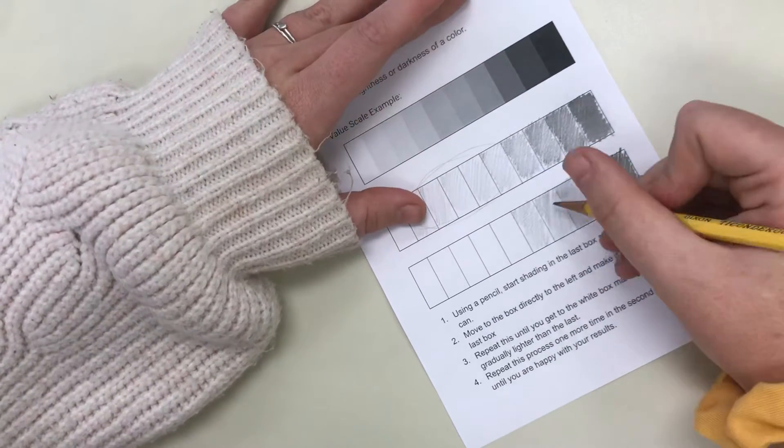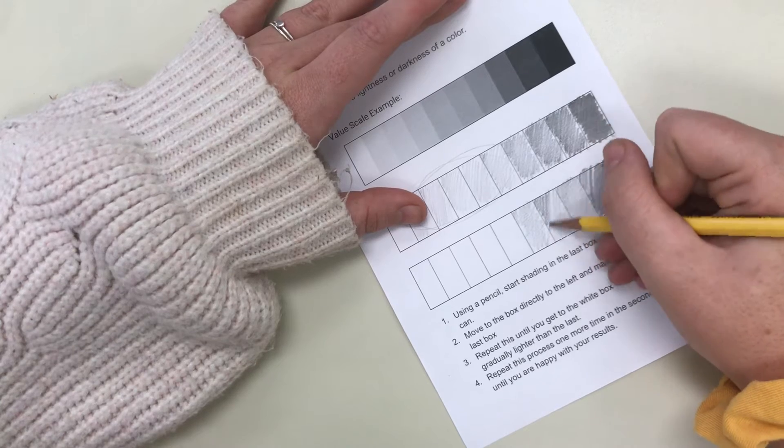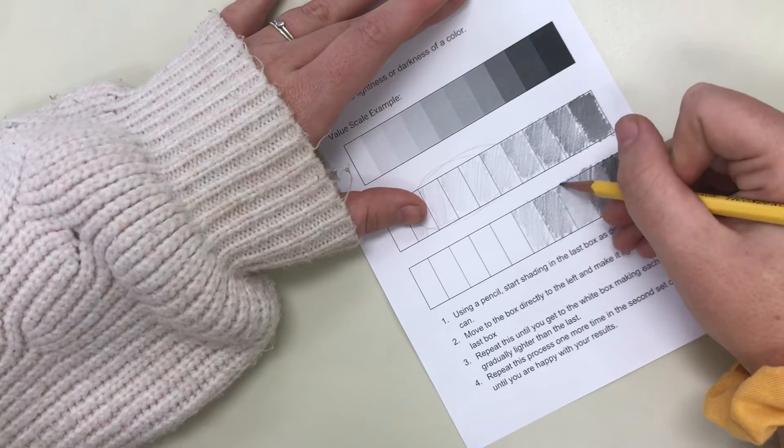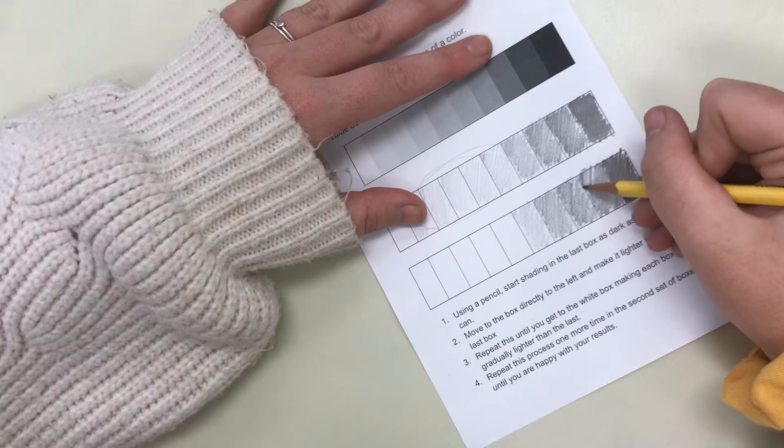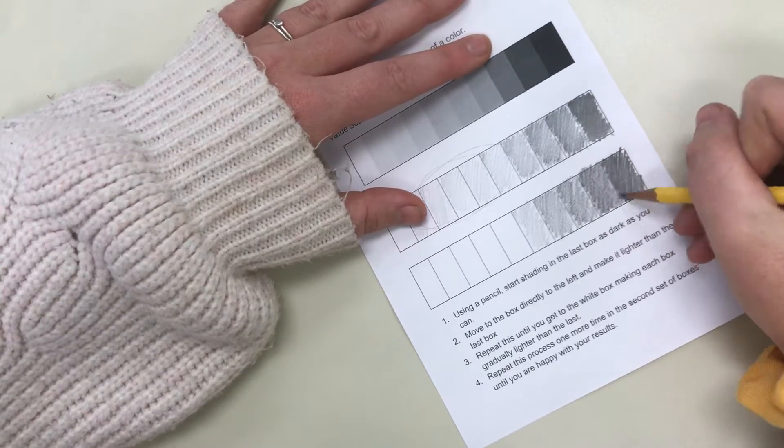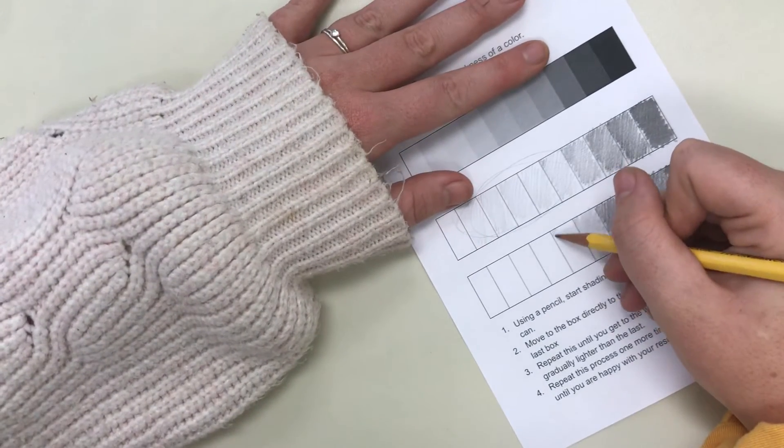I'm gonna go back, see I'm getting maybe a little too light and they're kind of the same right here. So I'll go back and darken that one. Darken this one back up and then darken that one. And then I'm gonna go back and keep going lighter.